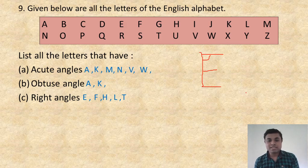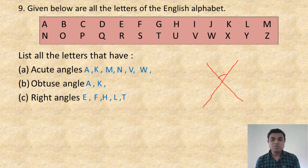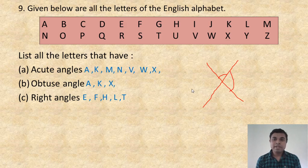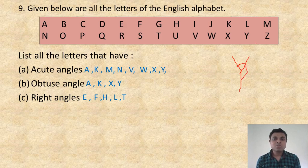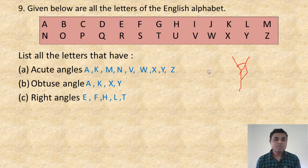Z — only acute angle. Just see the acute angle there. Is it clear?